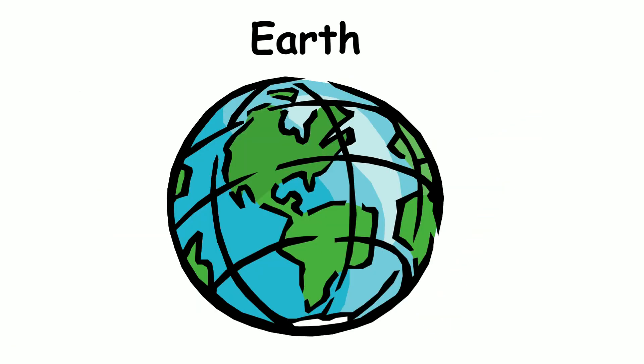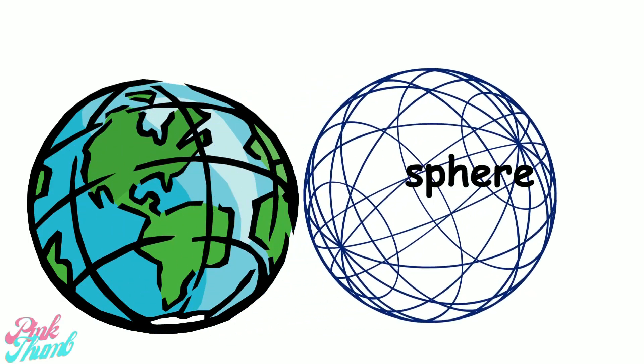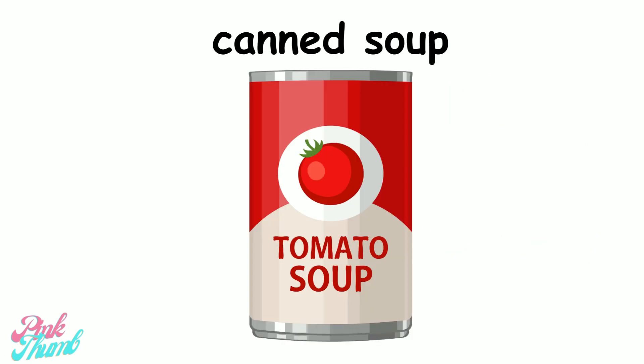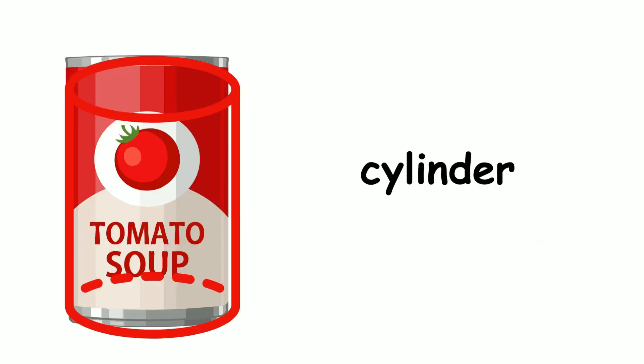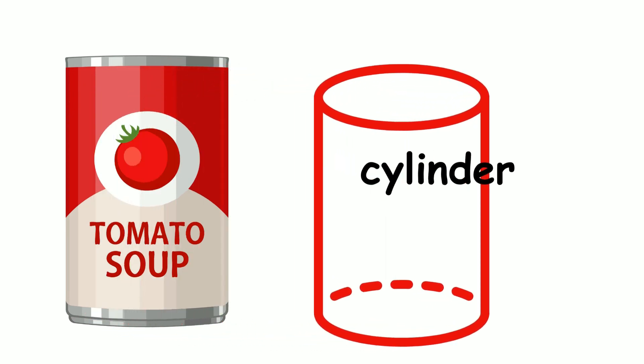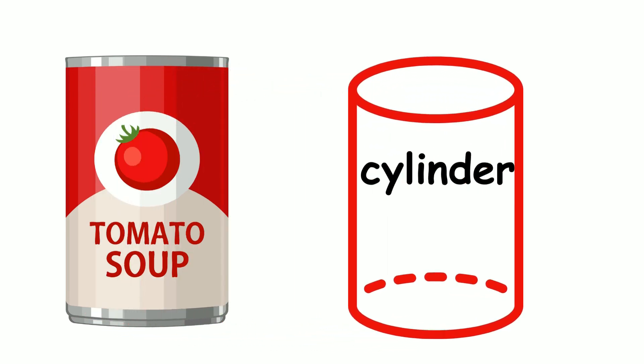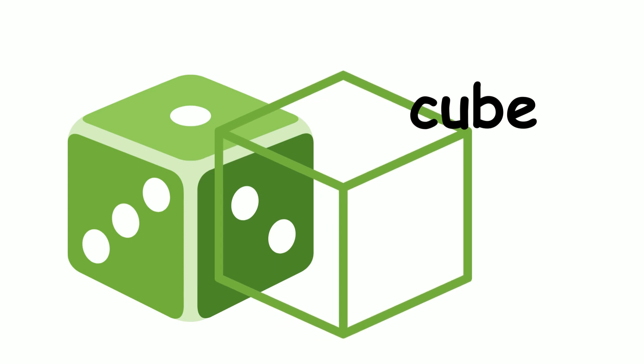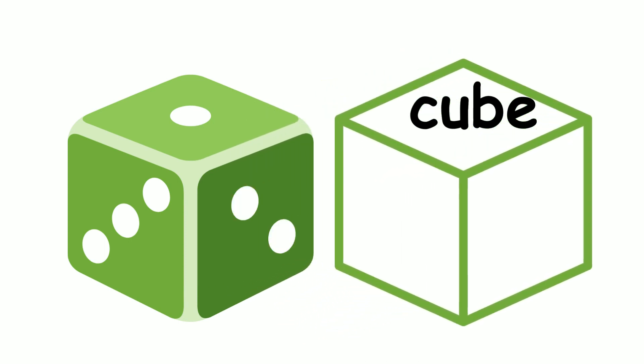What shape is the earth? A sphere. What shape is this canned soup? A cylinder. What shape is this die? A cube.